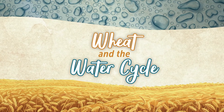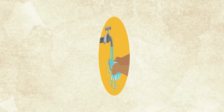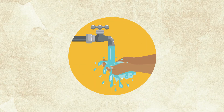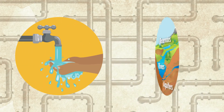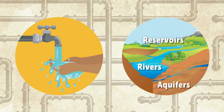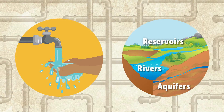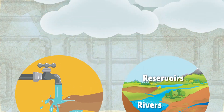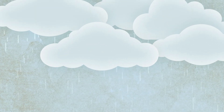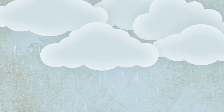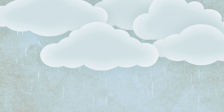Water comes to us in many forms. We receive it through our water taps from pipes that connect to rivers, reservoirs, and aquifers. We also receive various forms of precipitation including rain from the clouds. We even receive it frozen in the form of snow in the winter.